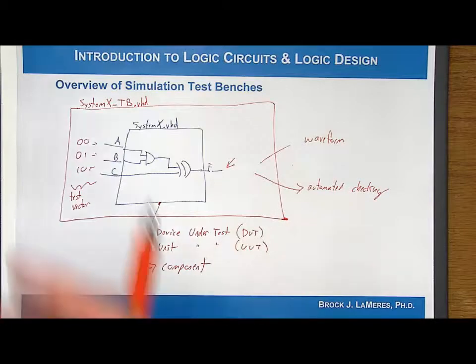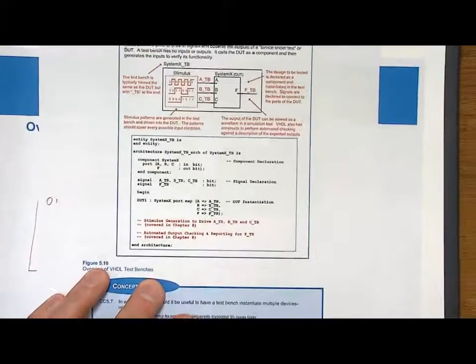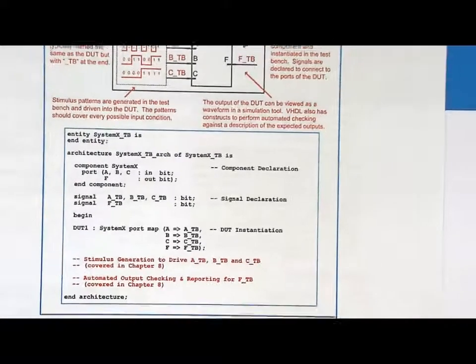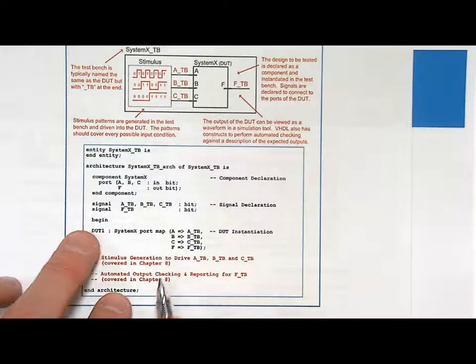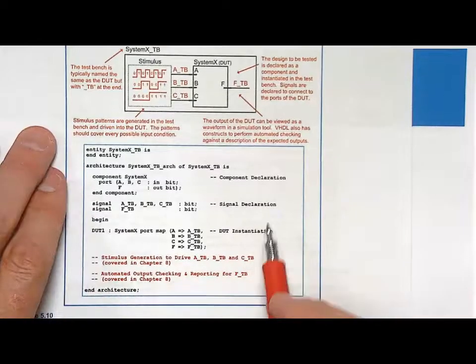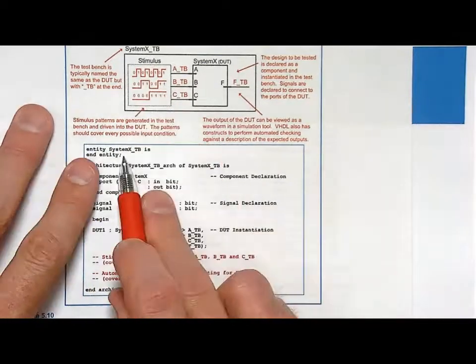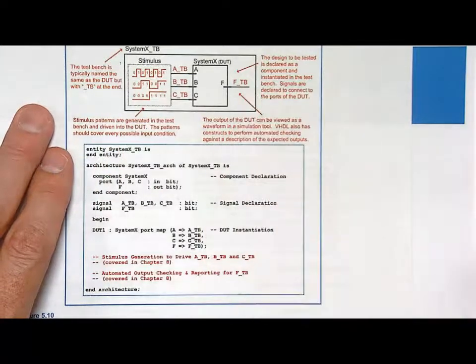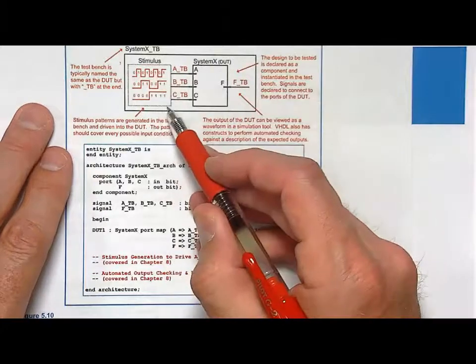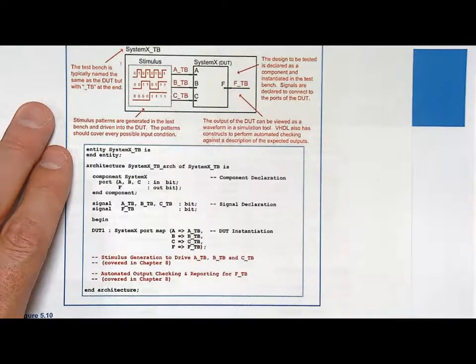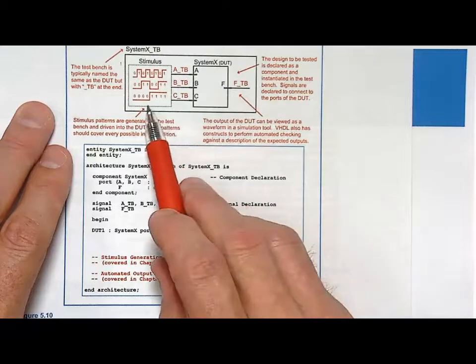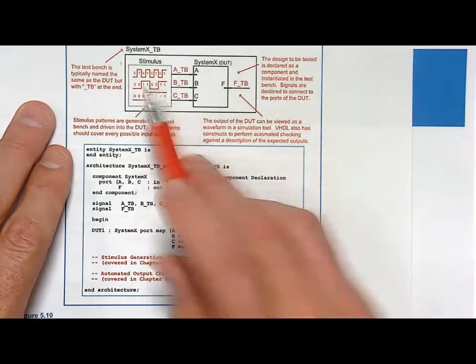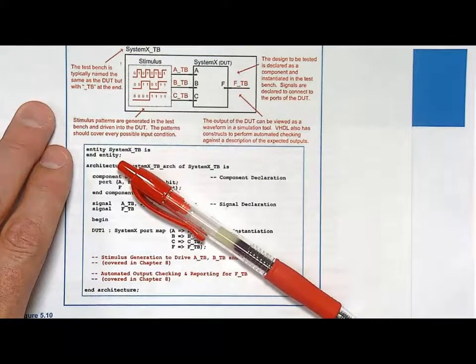Now, if you look at an example of a test bench, here's kind of that same picture drawn out. We haven't covered the syntax in here, but some of it is pretty straightforward. Notice that we're going to have a test bench. It doesn't have any inputs or outputs because it doesn't make sense to have inputs and outputs because there's really no signals going in and out. We're going to have some VHDL capability right here that generates these test vectors. And it generates them internally. They're not inputs into the test bench. They are just internally generated vectors.